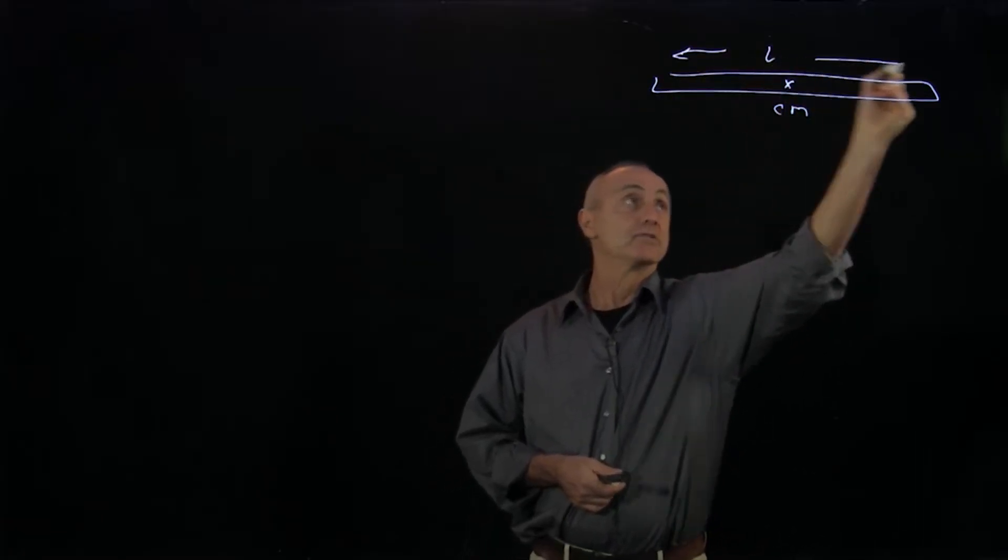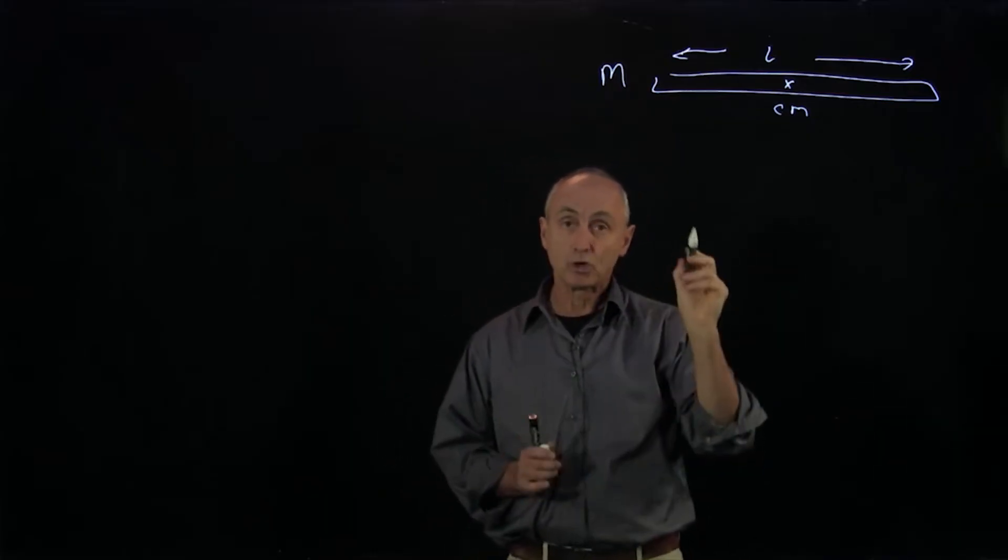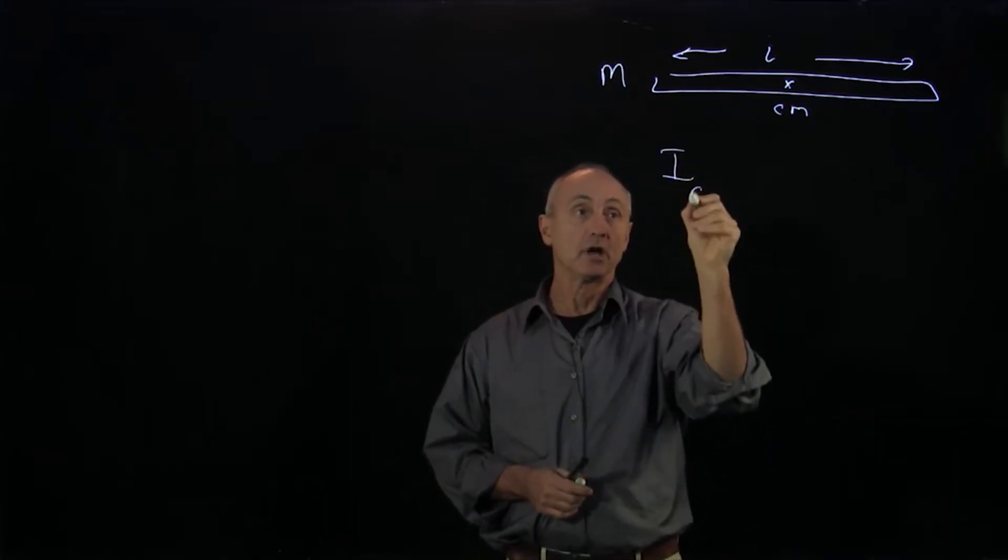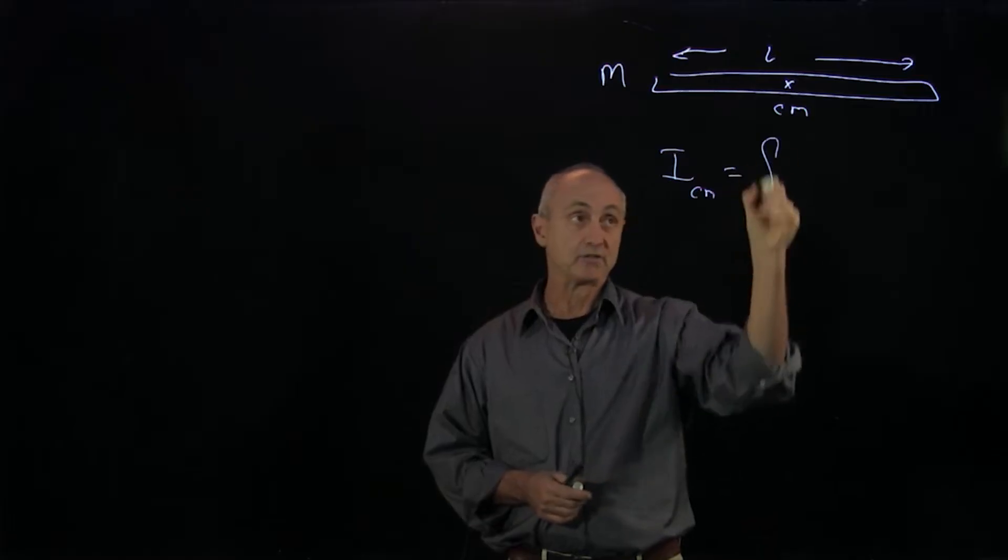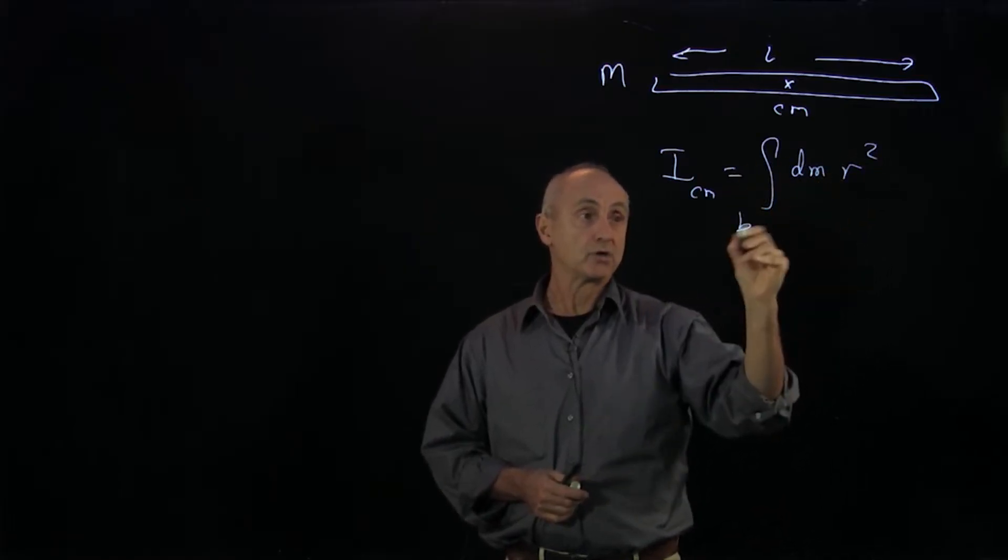Let's say the body is of length l and has total mass m. Recall that the moment of inertia about the center of mass is defined as an integral of dm r squared integrated over the body.